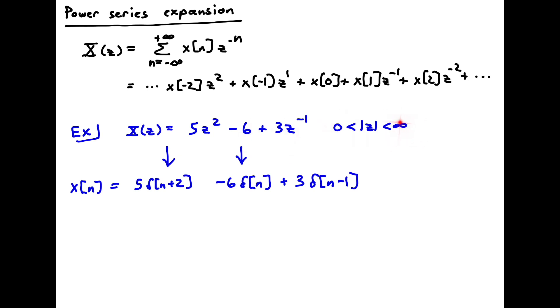And the reason for this ROC here we can pretty easily see is that the region of convergence can't include 0 due to this term, and it can't include infinity due to this term. And so that's the reason for that ROC that we were given. So this is just a finite length sequence. And it looks like a 5 at minus 2, a minus 6 at 0, and a 3 at 1, and 0 everywhere else. So that's a simple explanation of using power series expansion to get the inverse easily of a finite length sequence.